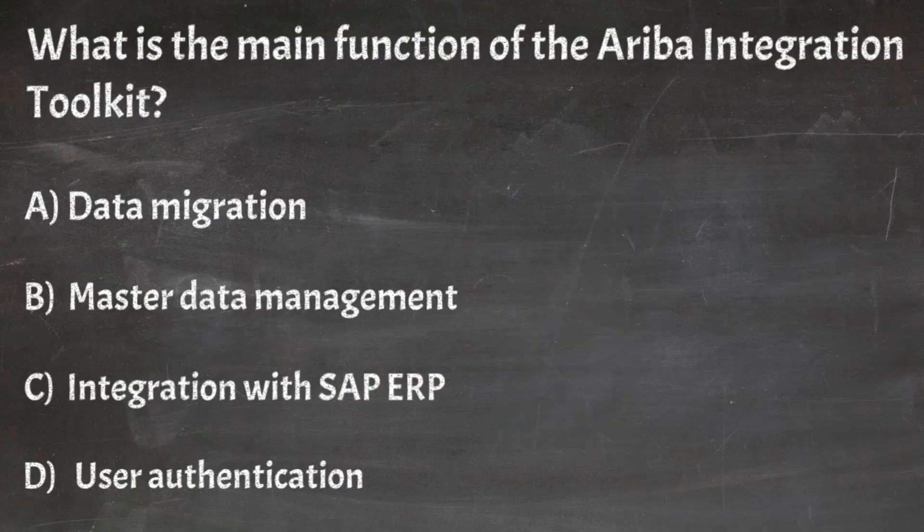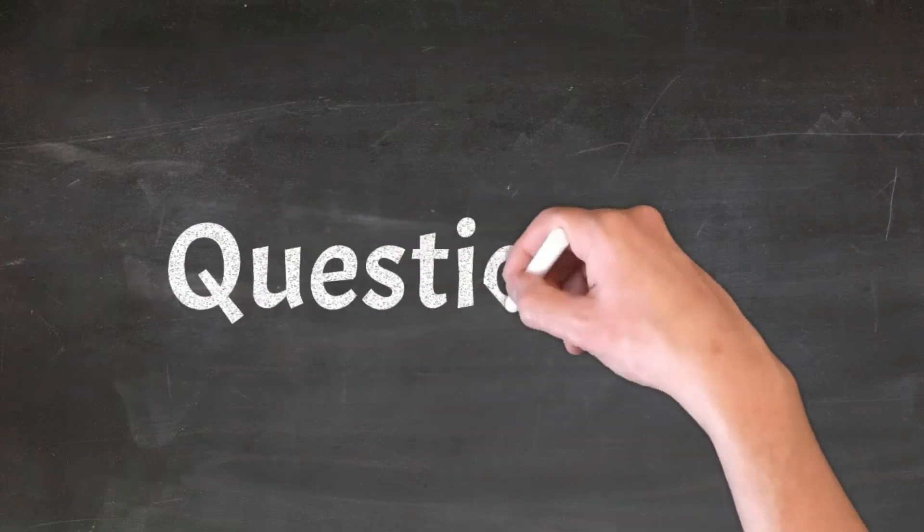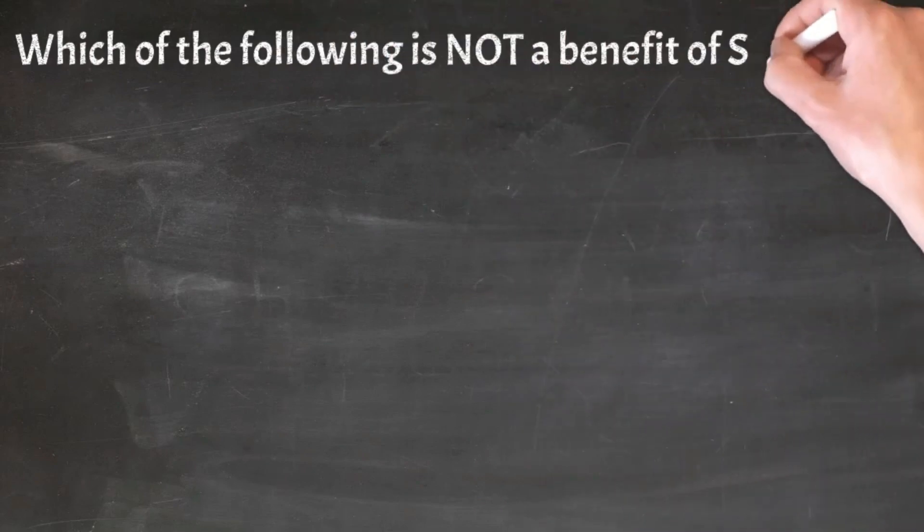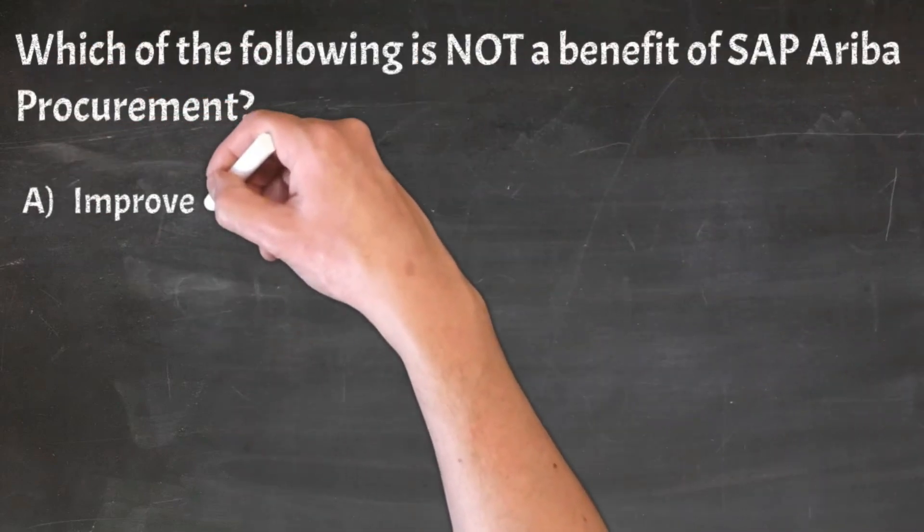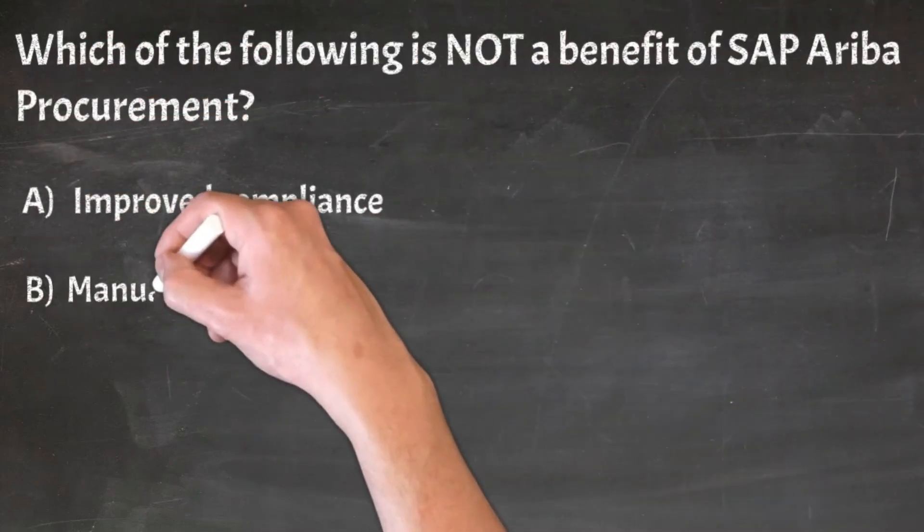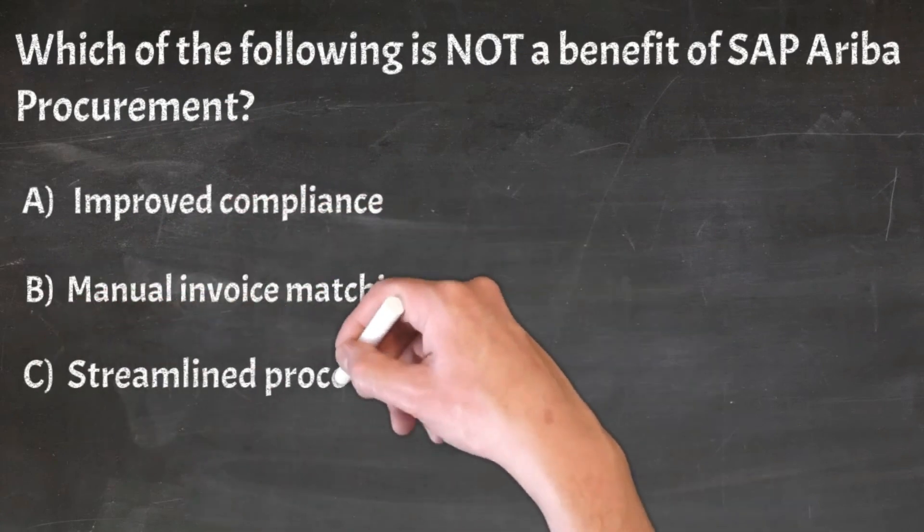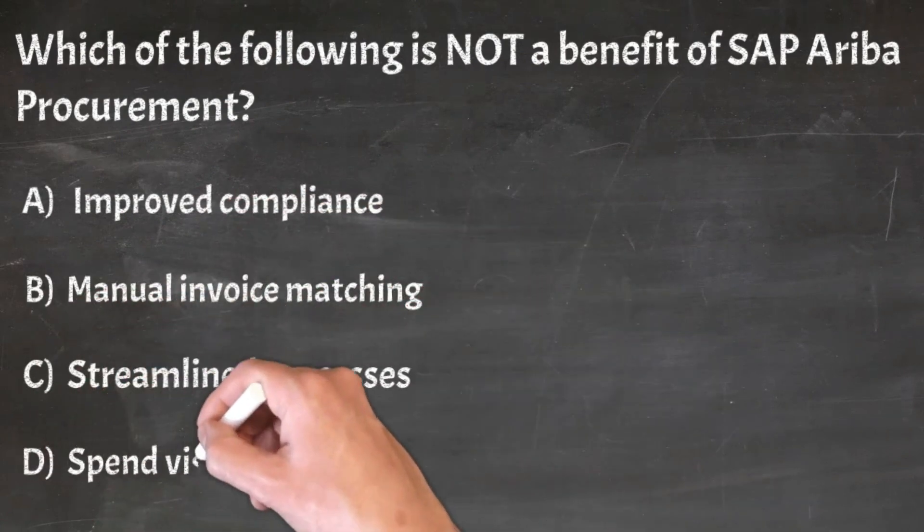Correct answer: C. Integration with SAP ERP. Question 25: Which of the following is not a benefit of SAP Ariba procurement? A. Improved compliance, B. Manual invoice matching, C. Streamlined processes, D. Spend visibility.